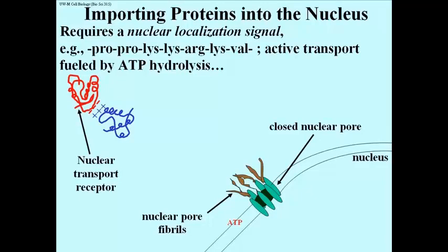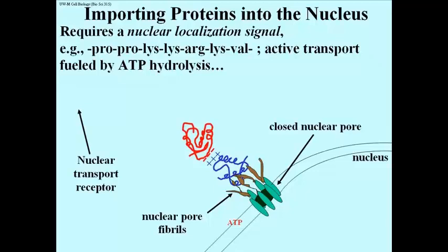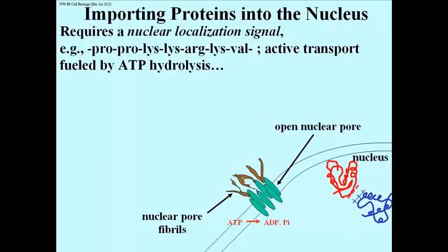That compound structure of a nuclear protein produced in the cytoplasm, bound to its nuclear transport receptor, can now find a nuclear pore shown in this illustration with its nuclear pore fibrils. Upon binding to the fibrils, the closed nuclear pore will open up and this protein will be actively transported along with the hydrolysis of ATP.